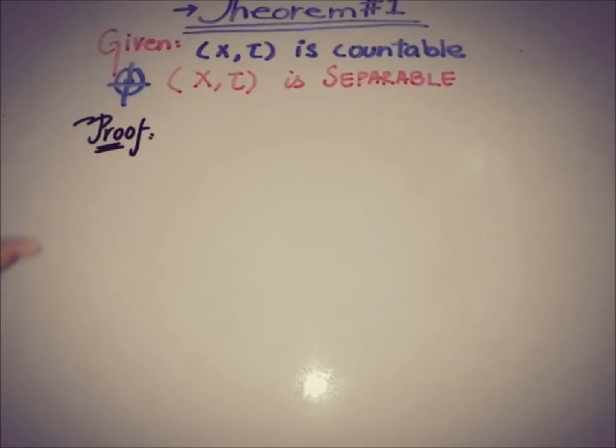The given thing is that we have (X, τ) as a topological space that has an additional property that it is a countable space. We will prove that (X, τ) is a separable space.